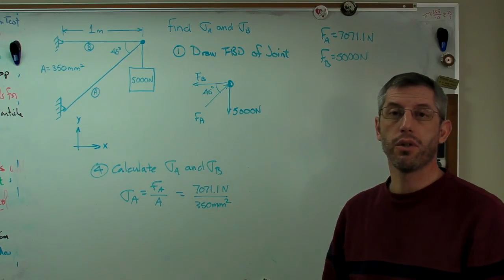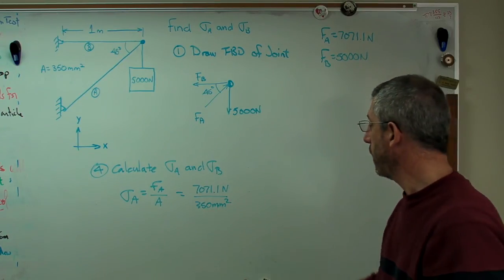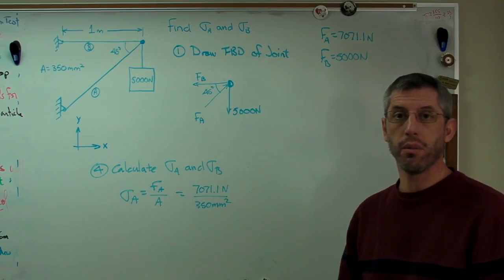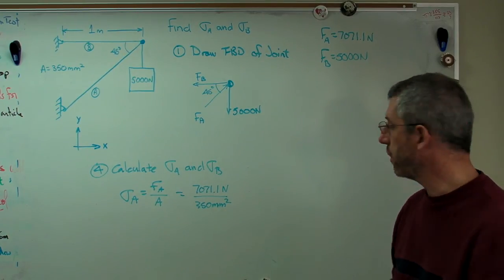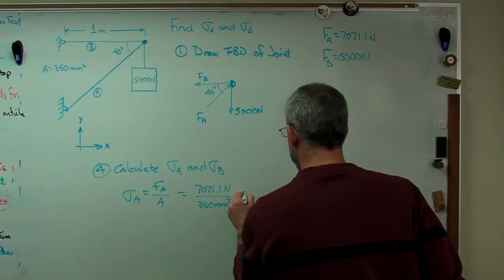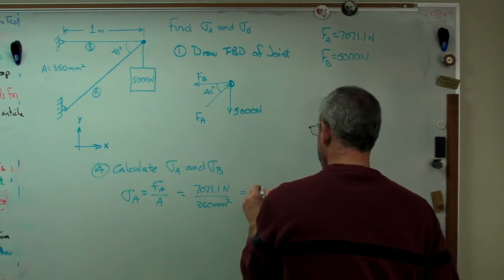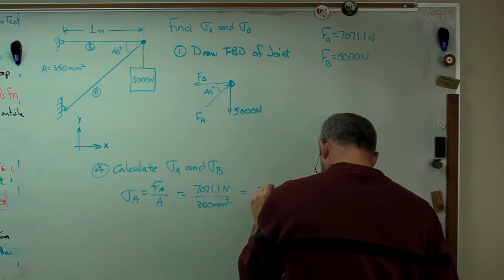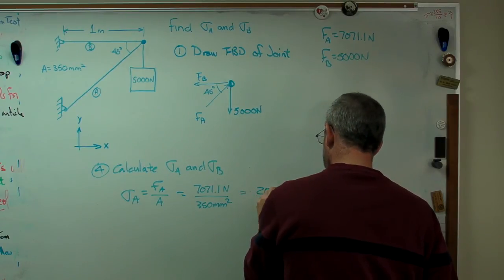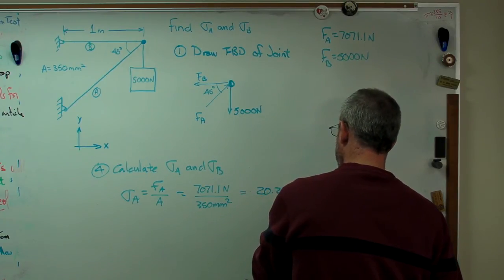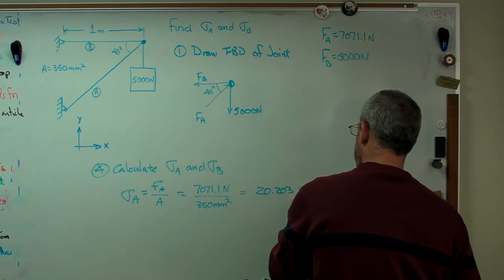Now if you divide newtons by millimeters squared, the answer is going to come out in megapascals. If you prefer, you can convert this to meters squared, and there's 1 million millimeters squared per square meter. So we're scaled by a factor of 10 to the sixth. When we do this, we get 20.203 megapascals.